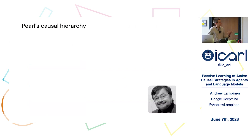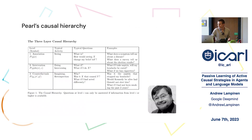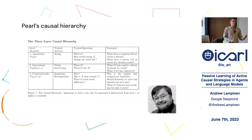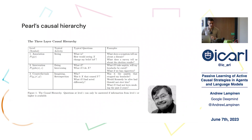Based on these ideas, Pearl introduced a causal hierarchy. At the first level you have associations or correlations — just the conditional probabilities of one variable given another. At the next level you have results of interventions — what you get when you change the state of the world. And finally there are counterfactuals, which I won't touch on much in this talk.